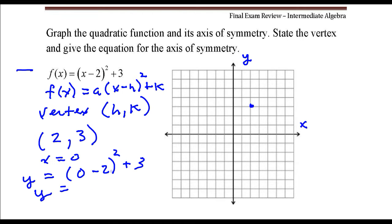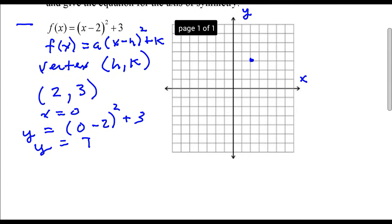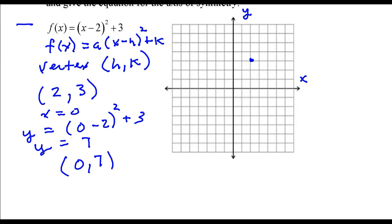So this is going to be negative 2 squared, that's 4, plus 3, that's 7. So the other point that we could use, which is the y-intercept, is 0 comma 7. We'll go ahead and plot that.